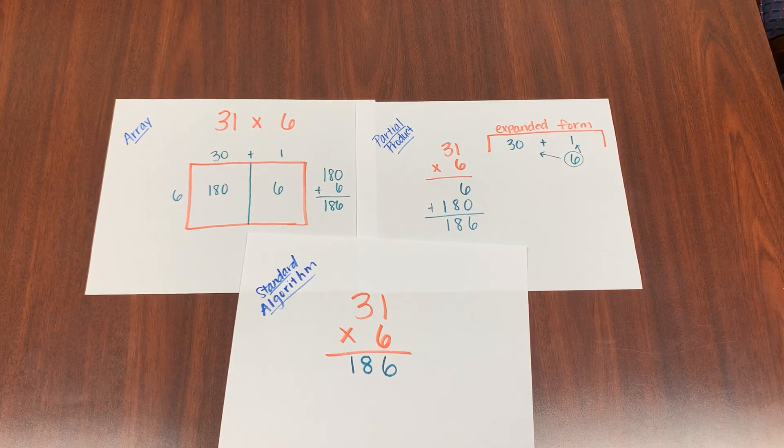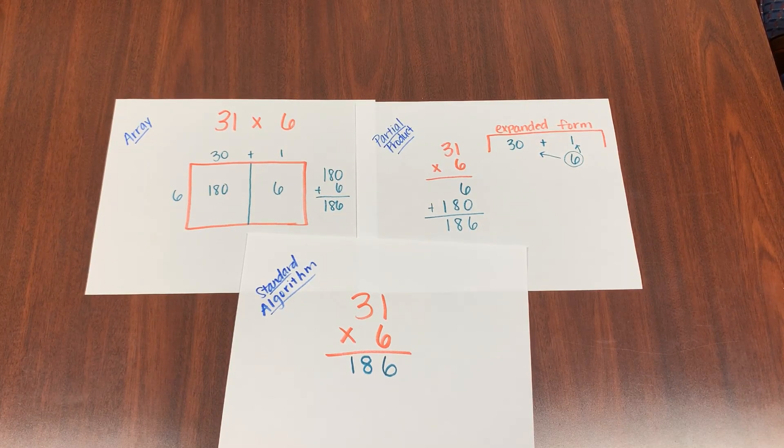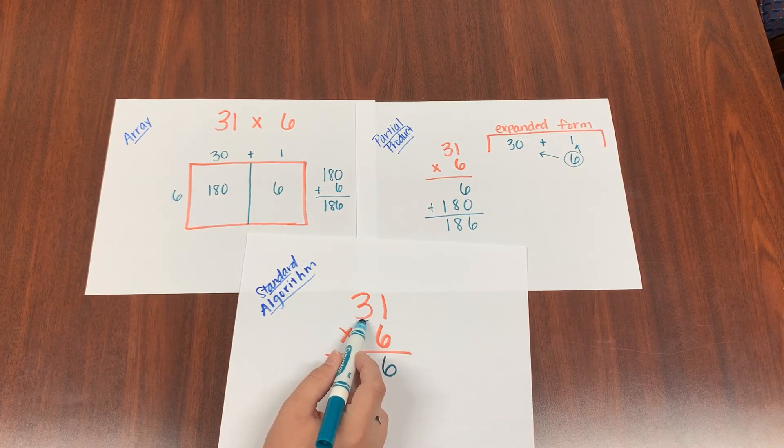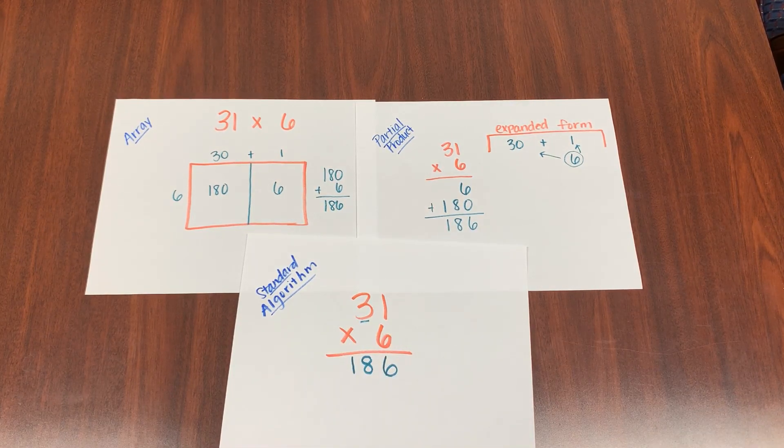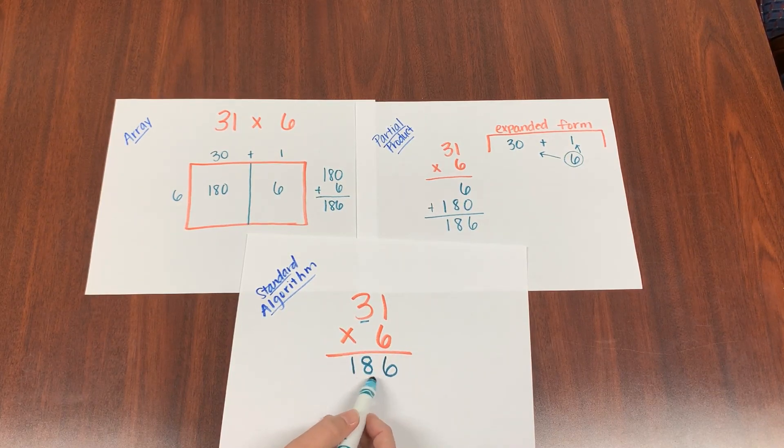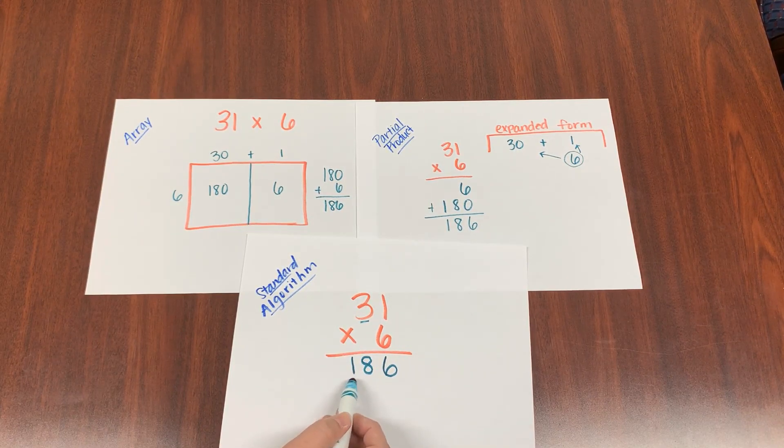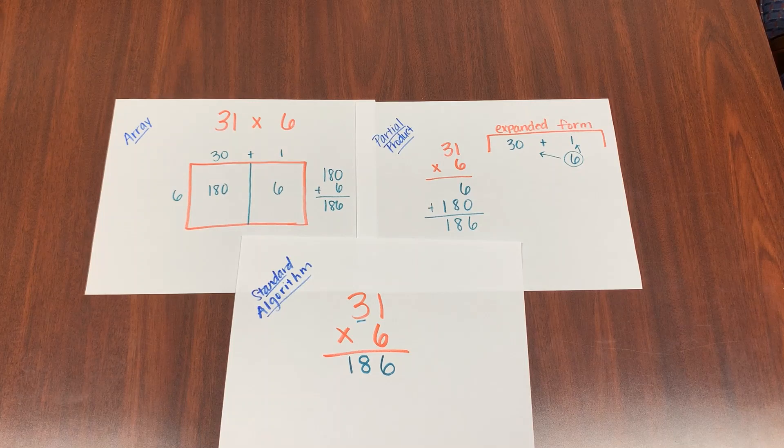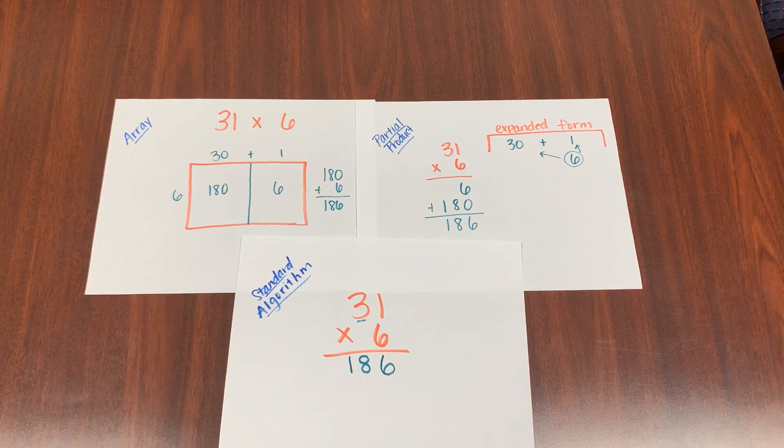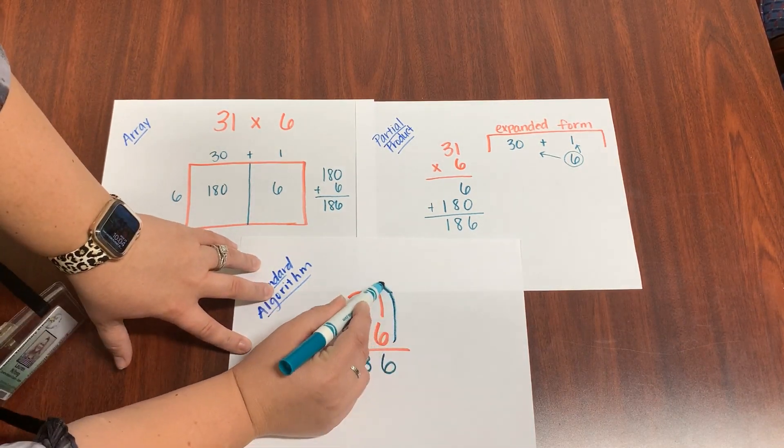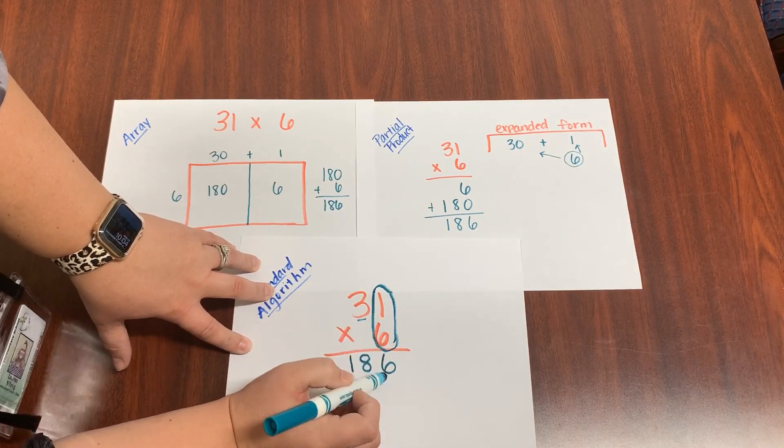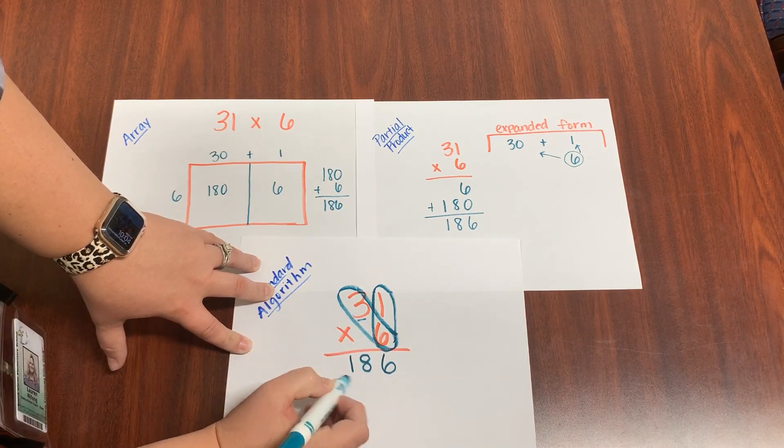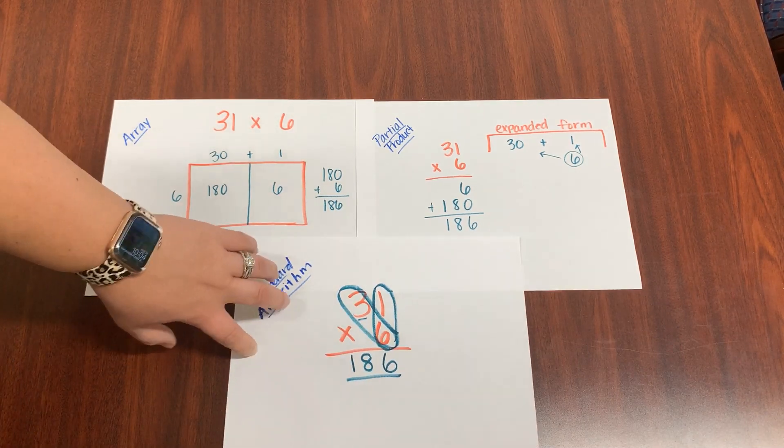Notice that I got the same answer. One thing I want to point out here is that I am multiplying a 6 times 30. This 3 in the tens place really represents 30. So that's like 18 tens, which makes 180 plus the 6 ones that we have, which is 186. So it's still doing the same thing. We're just not writing it out in expanded form. 6 times 3 is 18. And we wrote it down right beside to finish our product.